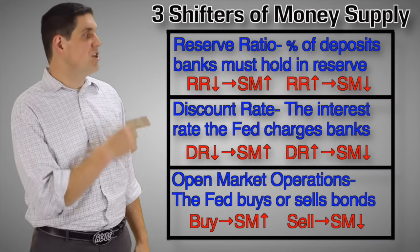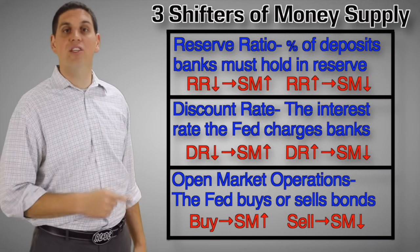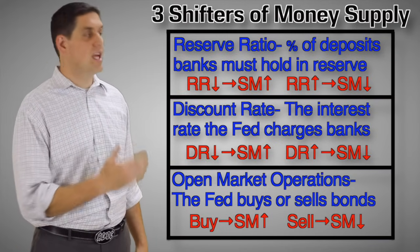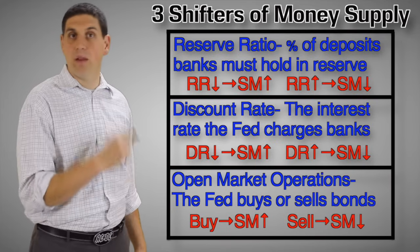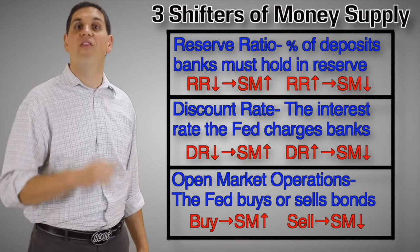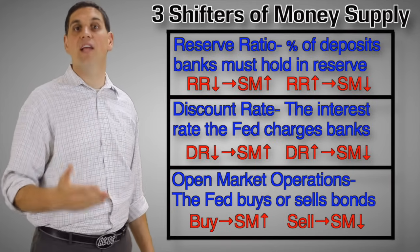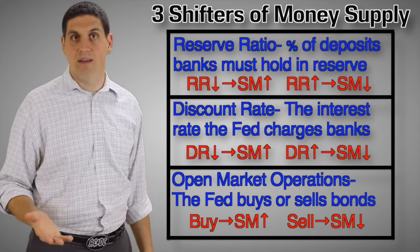Now that seemed really simple, but it's actually a lot more complicated. To learn more about fractional reserve banking and how banks actually create money, go ahead and watch this video. To recap, the Fed can change any one of these three things to increase or decrease the supply of money, therefore changing interest rates and changing aggregate demand.